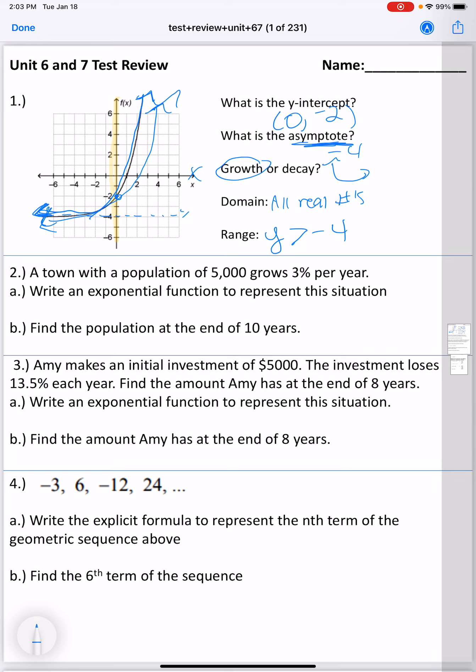Number 2 is a town with a population of 5,000 grows 3% per year. We need to write an exponential function. Since it's growing, we're going to use our growth formula, which was f(x) = a(1 + r)^t. Remember, a is the initial amount, so 5,000. The 1 always stays. The rate needs to be written as a decimal, so 0.03. And then this question doesn't necessarily ask us for time yet. That's in the next question, where we plug in 10 for time.